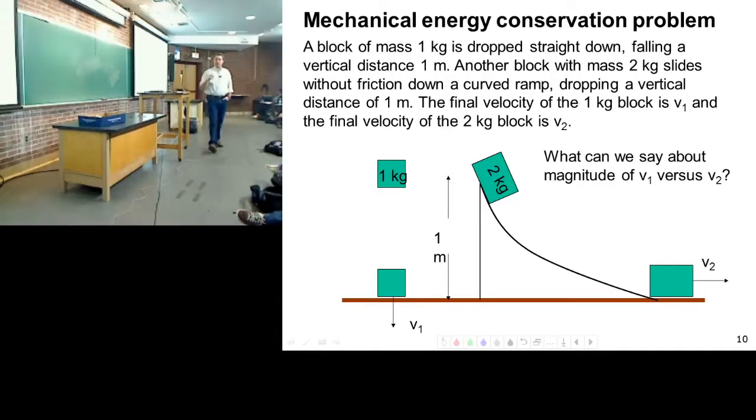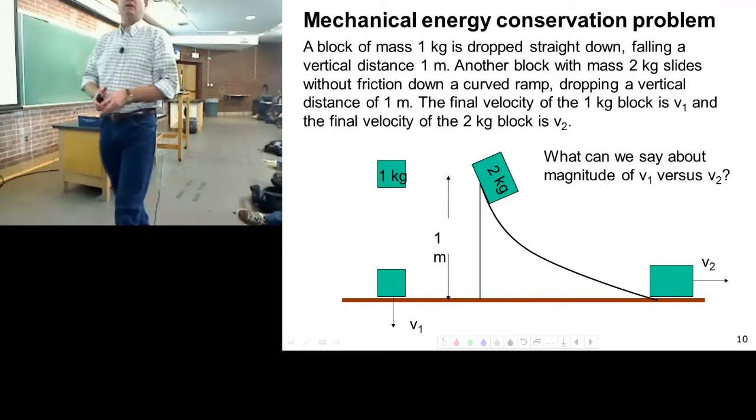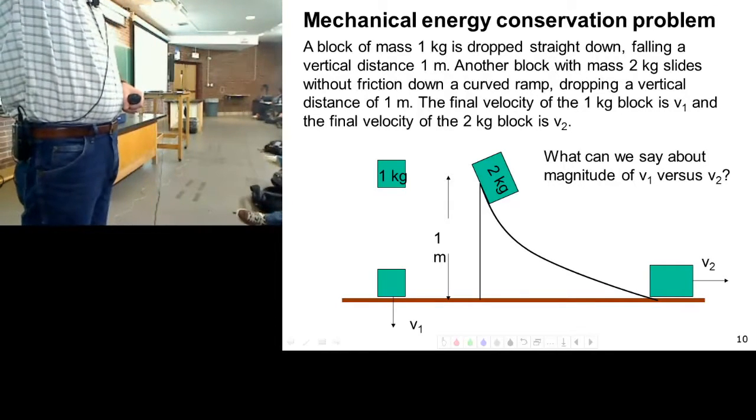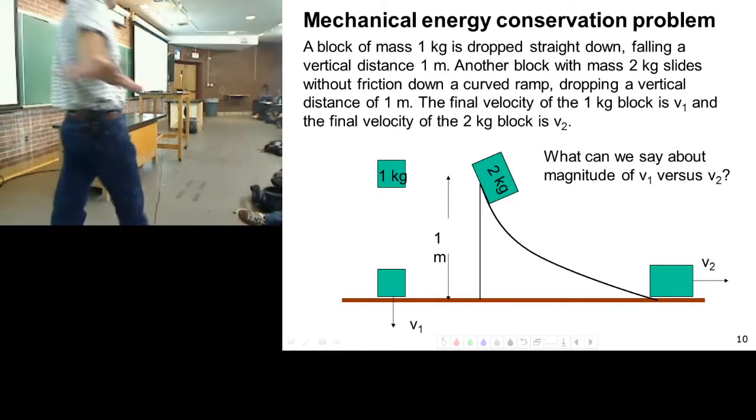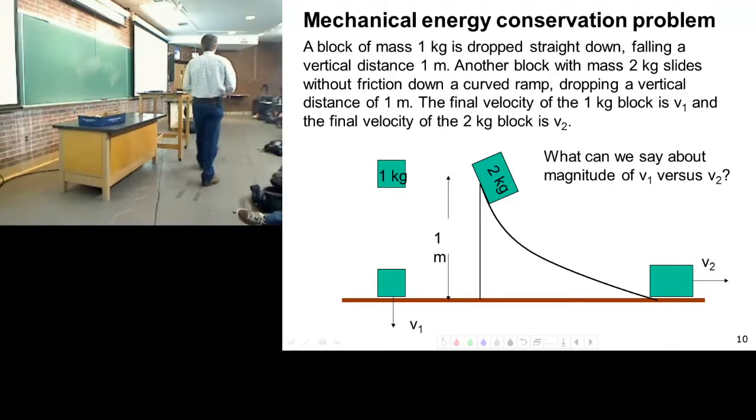How will these two numbers compare? One kg dropping straight down one meter, two kgs dropping down one meter but following a curved path. What do I know about the magnitude? What does magnitude mean? Just the number, right?